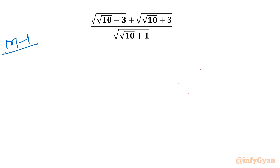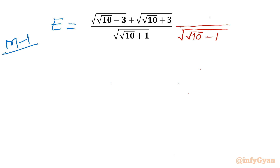Let me write here Method Number 1. Let me call this expression equal to E, and now I will use the method of rationalization. I will consider rationalization with the denominator, so I need to multiply numerator and denominator with the denominator's conjugate — that would be square root of (√10 minus 1). I will multiply with the same in the numerator also.